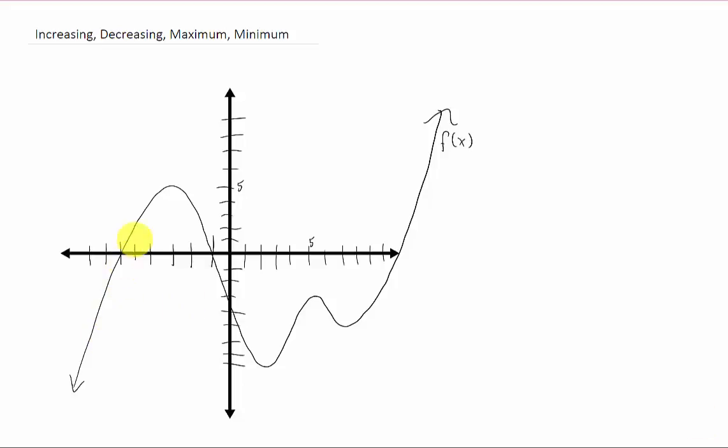Here's a function. I'm going to point out some things about this function that we might be interested in. If you are an ant walking along this function from left to right and you're going uphill, we say that part of the function is increasing.